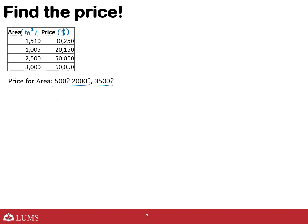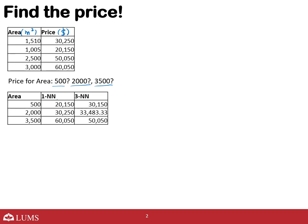Jo regression aap ko is course mein abhi tak padhai gayi hai woh nearest neighbor regression hai. Hum aisa karte hain ke is pe 1NN aur 3NN lagate hain — simple unweighted, distance ke hisaab se weight change nahi kar rahe. Jab hum yeh apply karte hain, aap ki practice bhi ho jaye gi. For 500, 2000, aur 3500 square meters, yeh prices aa gayin jo in algorithms ne nikal ke de diin. Yahin tak sab kuch theek lagta hai.